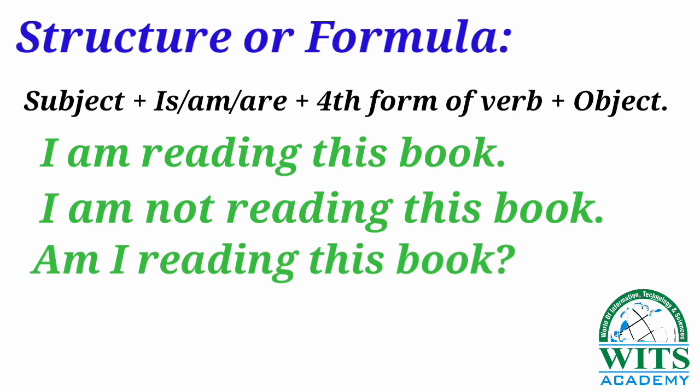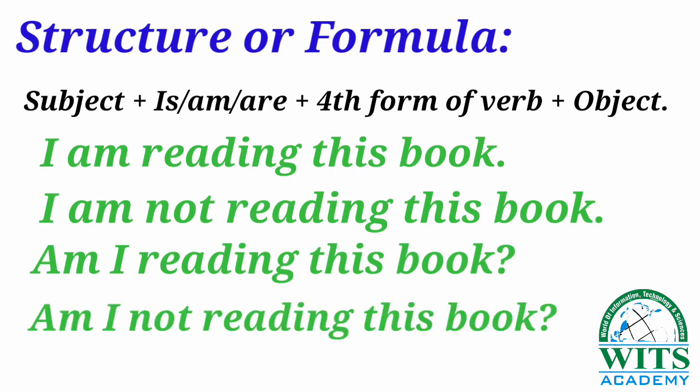Now let's convert the same sentence into interrogative plus negative: 'Am I not reading this book?' We put 'am' at the beginning, then the subject, then 'not', then the -ing form of the verb, then the object. And don't forget to put a question mark at the end of interrogative and interrogative-plus-negative sentences.